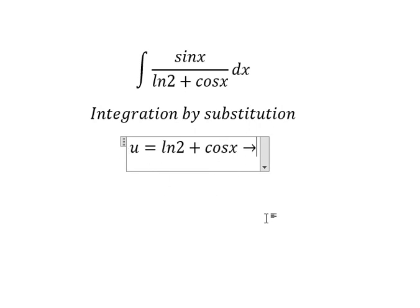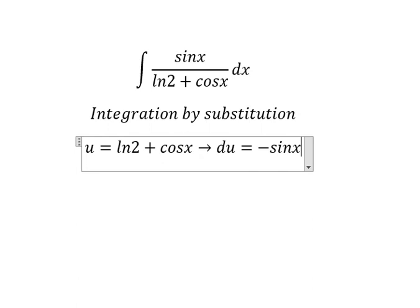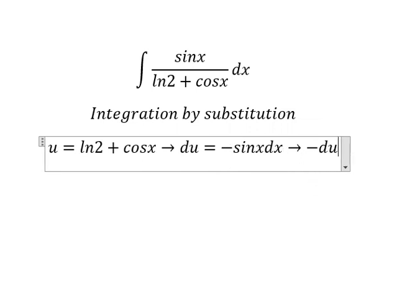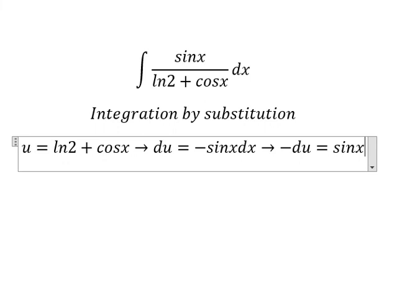And we have du equals to negative sine x dx. Because we don't have the negative sine in here, so I will put the negative next to the u, and then we have negative du equals to sine x dx.